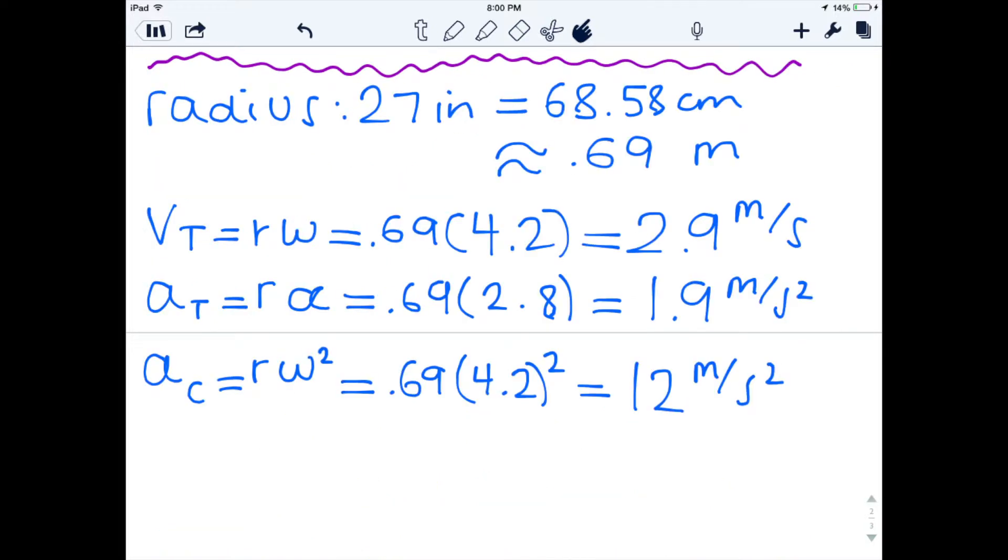Now we're going to take into account that the radius of the knives is 27 inches, which is also equal to 0.69 meters. With this, we're able to find the tangential velocity, which ends up being 2.9 meters per second, the tangential acceleration, 1.9 meters per second squared, and the centripetal acceleration, which is 12 meters per second squared.